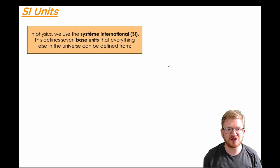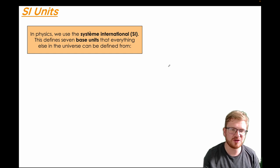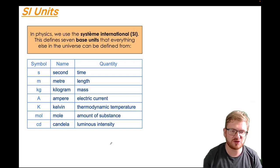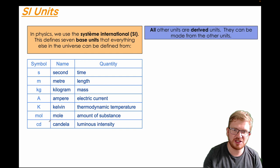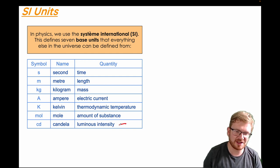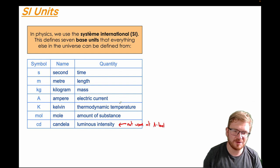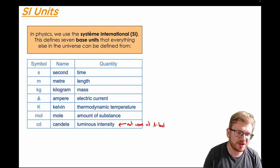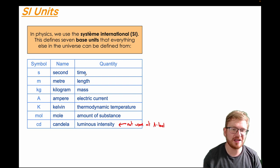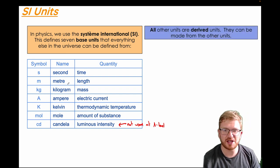In physics, we use the Système International. It's a French-based system and it defines seven base units that everything else in the universe can be defined from. You actually don't need to know the last one, the candela — this shouldn't be used at A-level — but all of the others are. Over the course of the next several lessons and indeed your whole A-level, we'll show that anything else you measure in physics or any other science is a derived unit from these.